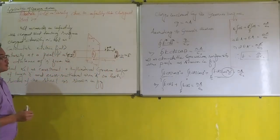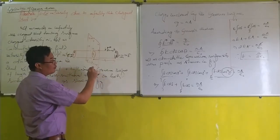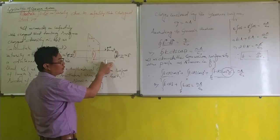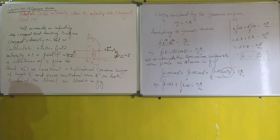First, we have to construct a Gaussian cylindrical surface of length L and cross-sectional area A on both sides of the sheet as a closed surface.